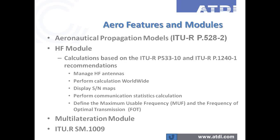The second additional capability is the High Frequency (HF) module — an embedded module in ICS Telecom and HTZ Warfare that performs calculations based on ITU recommendation P.533-10 and recommendation R.1240-1. The HF module helps manage high-frequency antennas, display ionospheric analysis, perform calculations worldwide, display signal-to-noise maps, perform statistics, and define maximum usable frequency and frequency of optimal transmission.